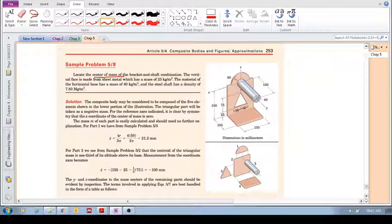Center of mass of this bracket and shaft combination. The vertical face is made from sheet metal which has a mass of 25 kilogram per meter squared. So if you want to find the total mass, you have to calculate the area and multiply by the area to get the total mass. The material of the horizontal base is 40 kilogram per meter squared. And then the steel shaft has a density of 7.83 megagram per cubic meter.